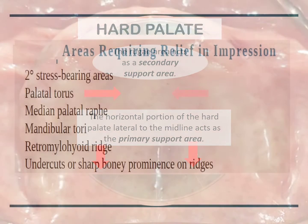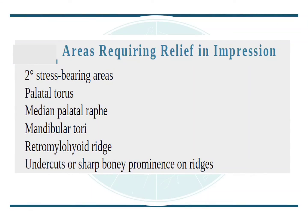The areas that require relief in an impression are the secondary stress bearing areas, the palatal torus, median palatal raphae, mandibular torus, retromylohyoid ridge, and undercuts or sharp bony prominences on the ridge.